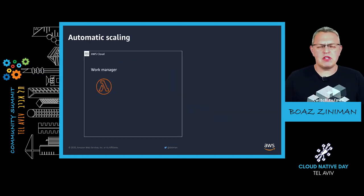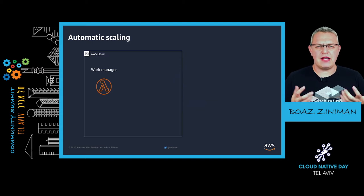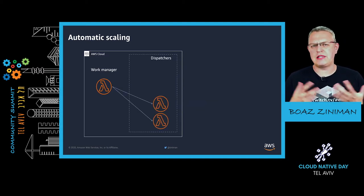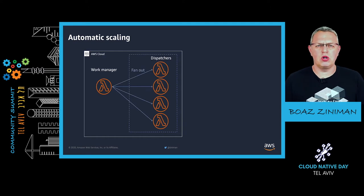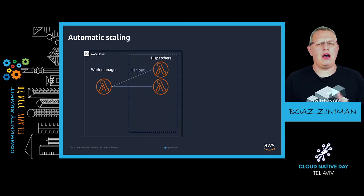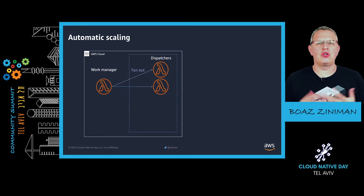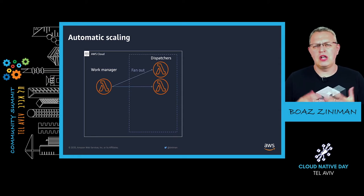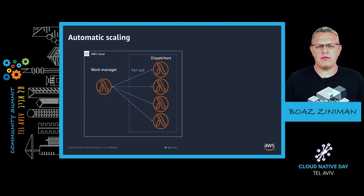We have customers building all kinds of serverless architectures. This is just one example of using a work manager — what we call dispatchers — in a fan-out architecture. There are other methods to scale your serverless application and launch thousands of serverless functions at the same time.